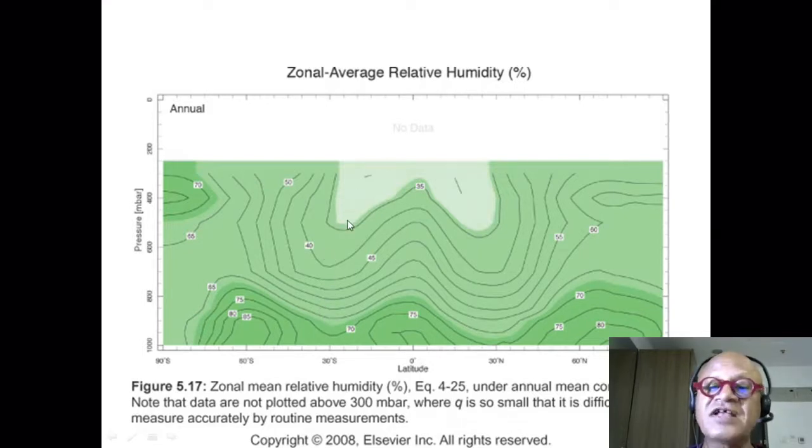Net effect, long story short, you get this kind of nice distribution which is somewhat of a tracer for the circulation, the Hadley circulation, and then there are other reasons why we have a structure here which has to do with cells as well, but we will see soon that those cells are much weaker.